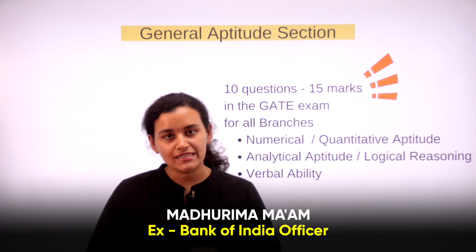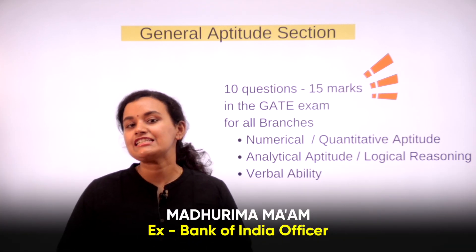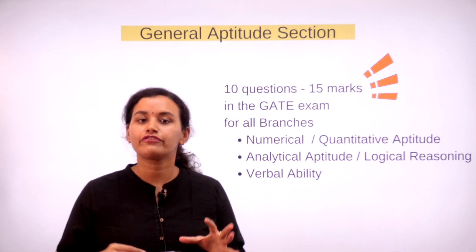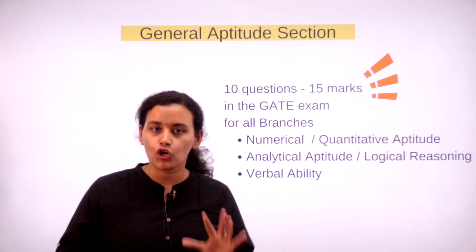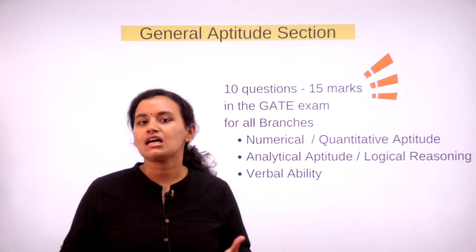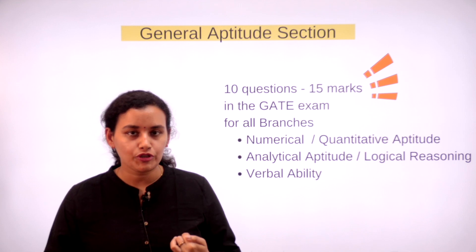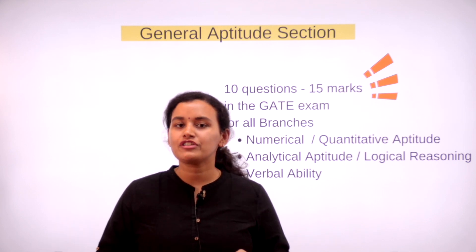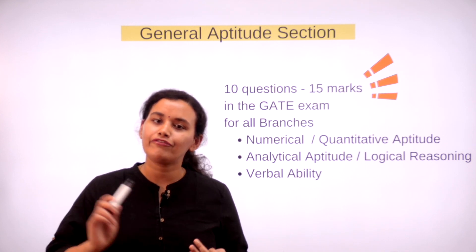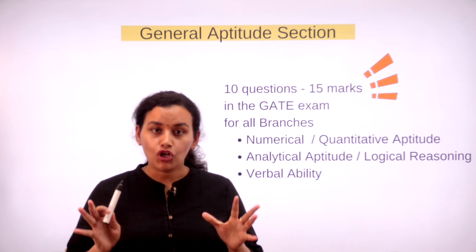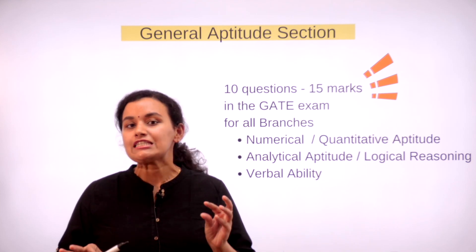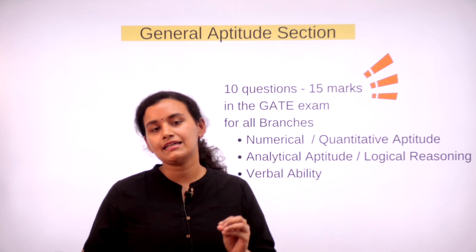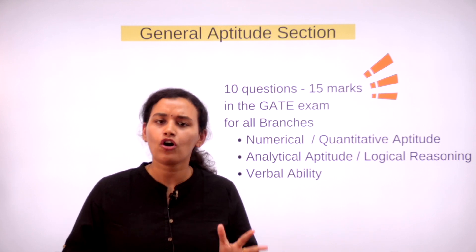One of the most important and scoring sections of your GATE paper is the general aptitude section, comprising 10 questions totaling 15 marks. It is asked across all branches. This section includes numerical aptitude (quantitative aptitude), analytical aptitude (logical reasoning), and verbal ability.